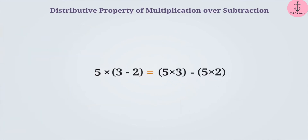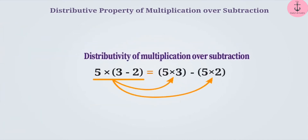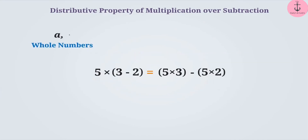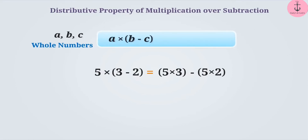Therefore, multiplication can also be distributed over subtraction. This shows that for any three whole numbers a, b, and c, a into (b minus c) can be distributed as a into b minus a into c. This is called the distributive property of multiplication over subtraction.